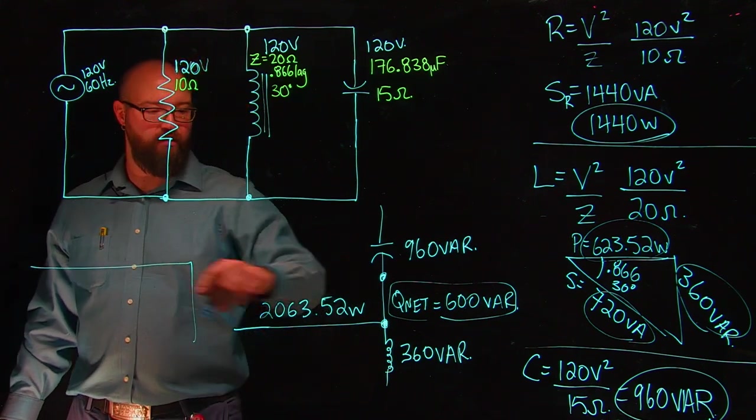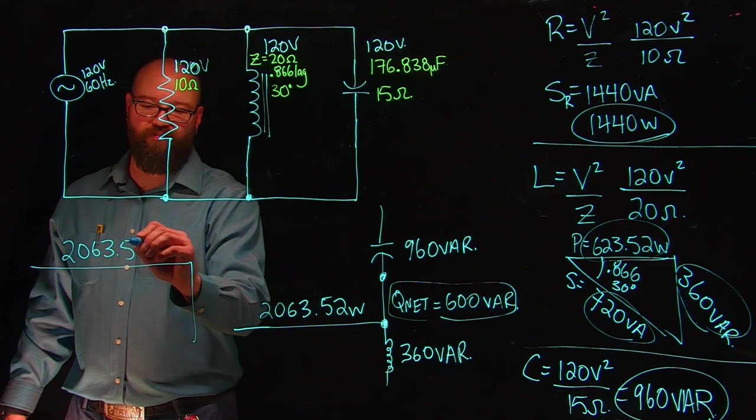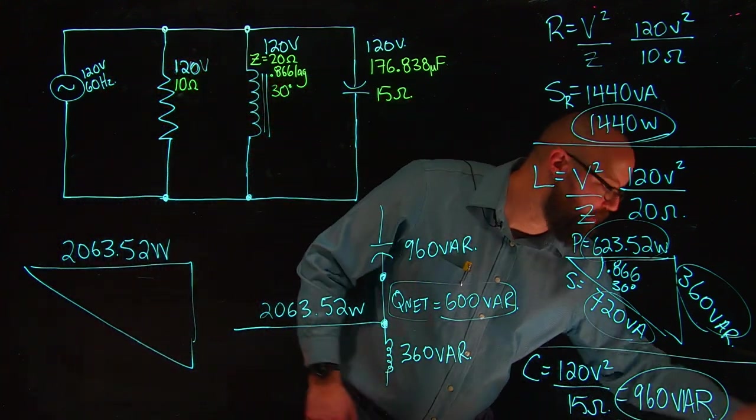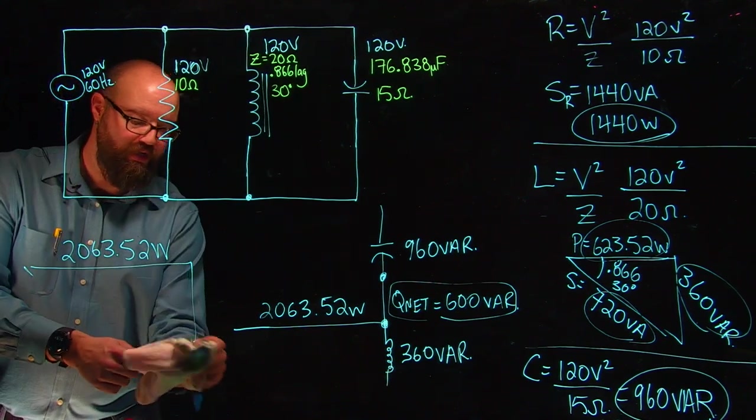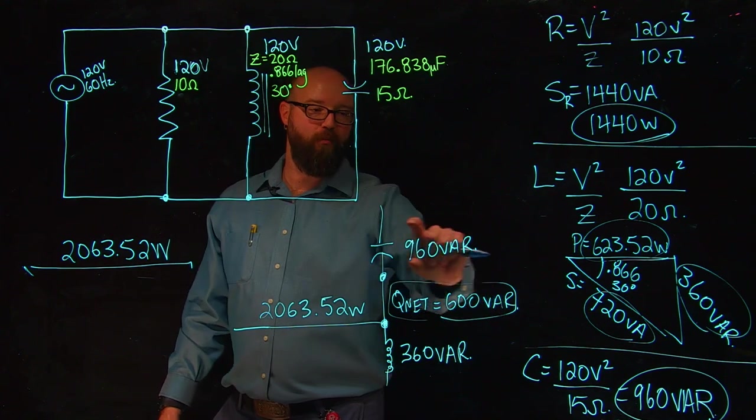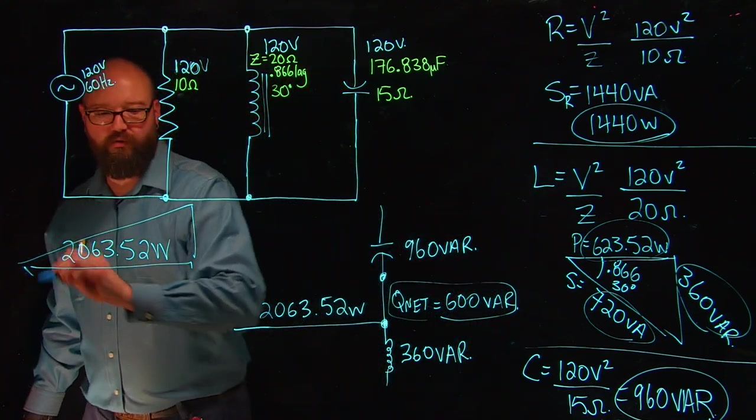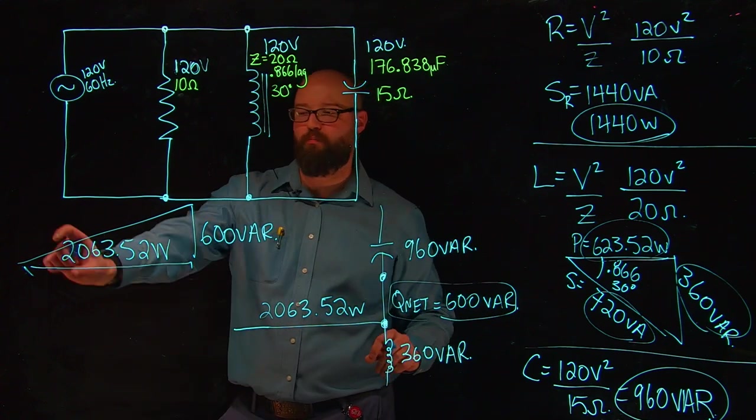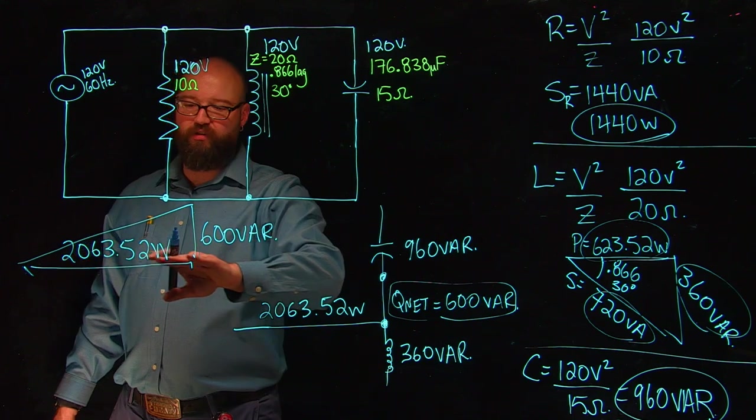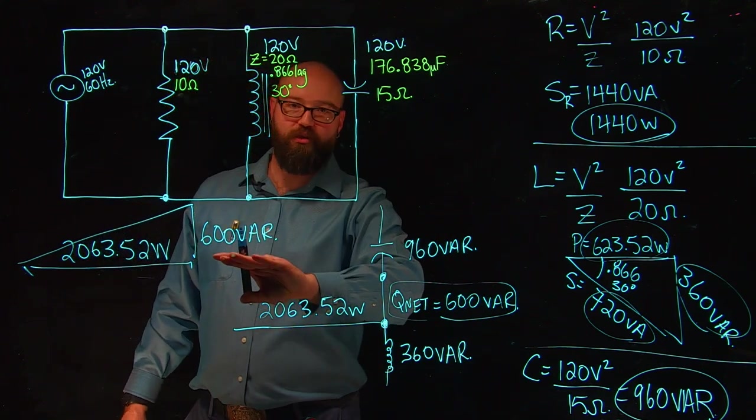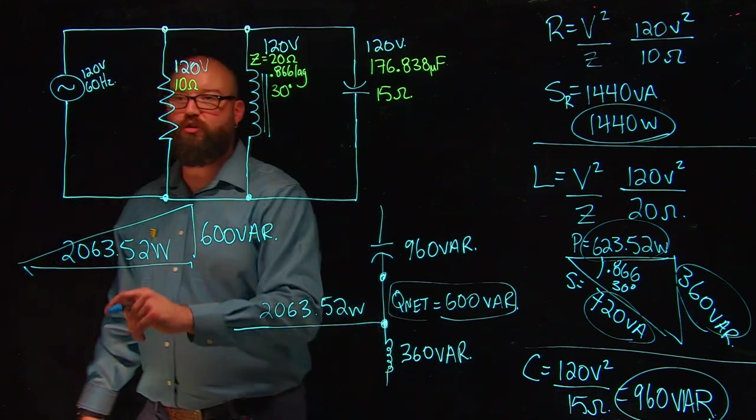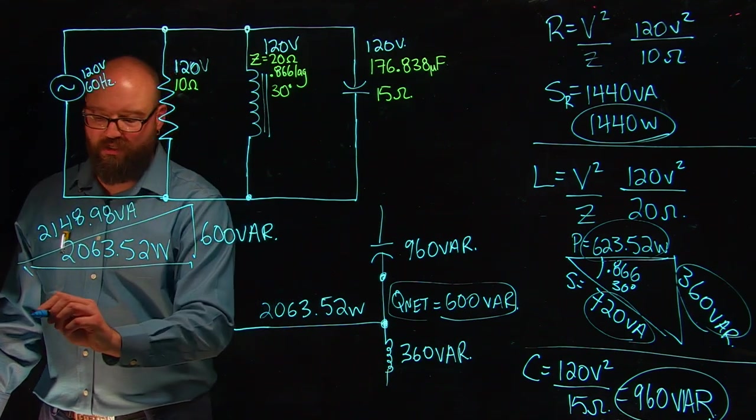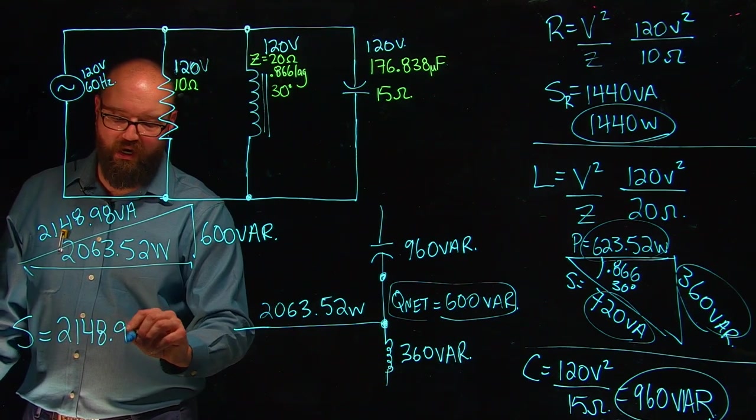We're going to move over here. We know that we have 2063.52 watts. Because it is a leading circuit, the way that I can tell it's a leading circuit just by looking at it is we have far more leading VARs than we do lagging, so we're going to end up up here. We have our 600 VARs. That's our total reactive power, and those are 600 leading VARs, which means our power factor will be leading in the end as well. Pythagorean's theorem, I have 2063.52 watts squared plus 600 VARs squared. The square root of that answer should be the new VA of my circuit. We should see 2148.98 VA. So S is equal to 2148.98 VA, and I told you at the beginning, we're going to use this to calculate line current, which we are. This is my total apparent power of my circuit, and I know this.